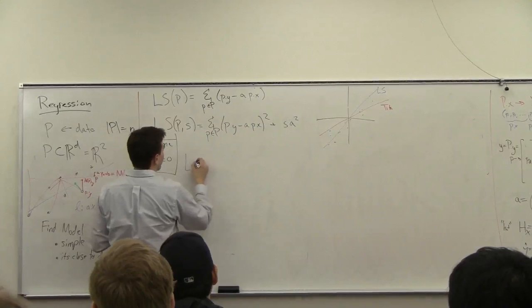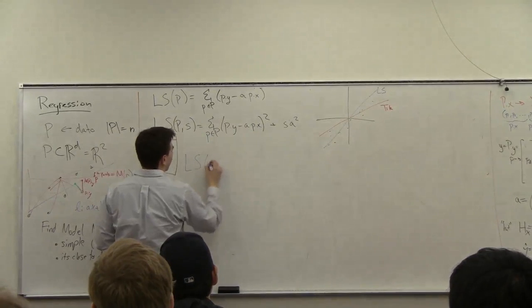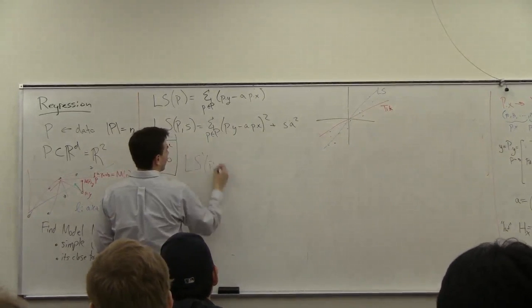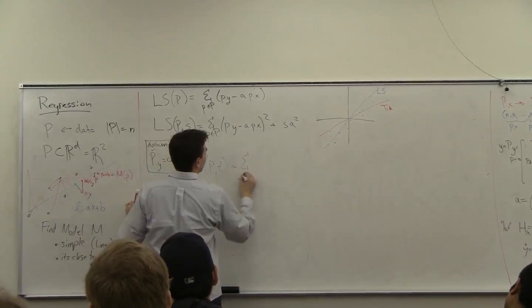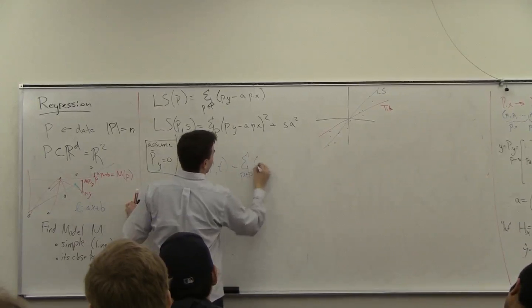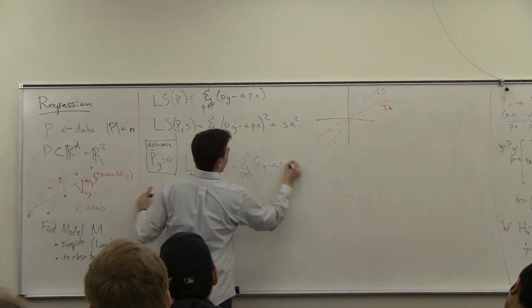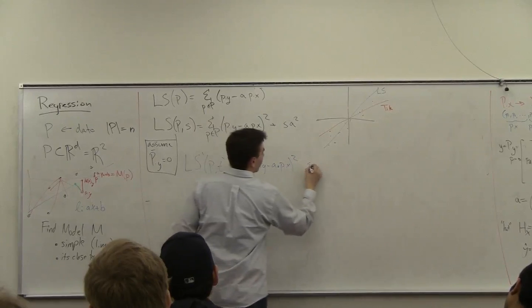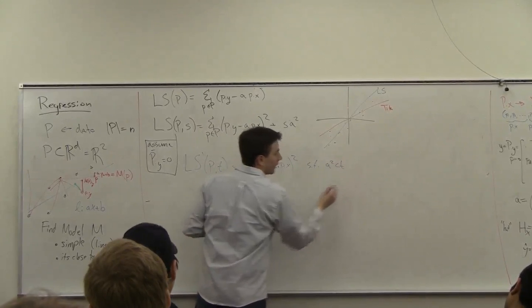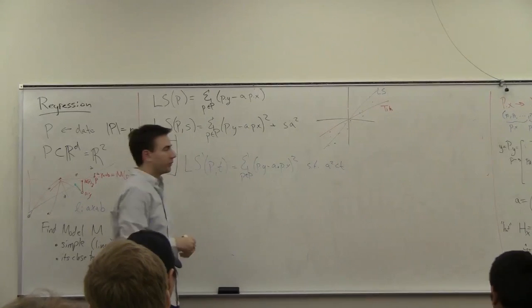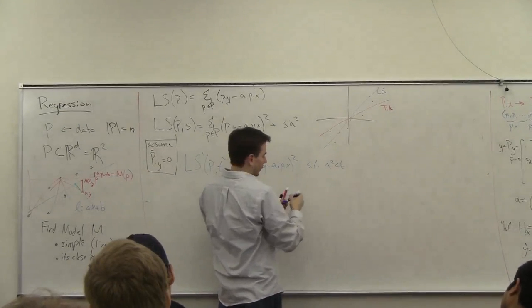to a different formulation called SP, let's call this S prime of t with a different parameter t, which is going to be equal to a times x squared, such that a squared is less than t. So now I'm putting a hard constraint, I'm saying the slope cannot be larger than t, is less than or equal to t.